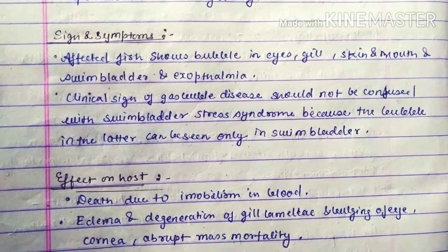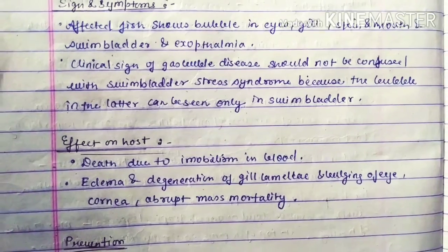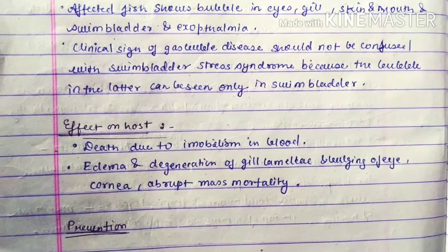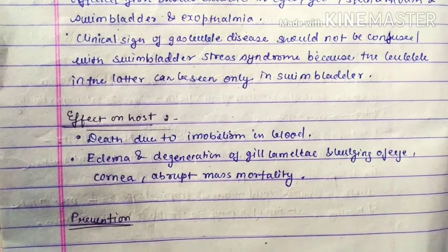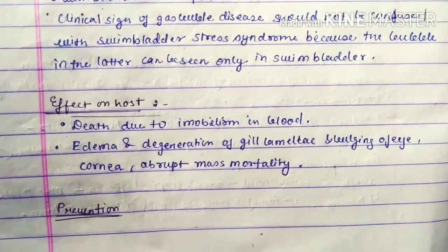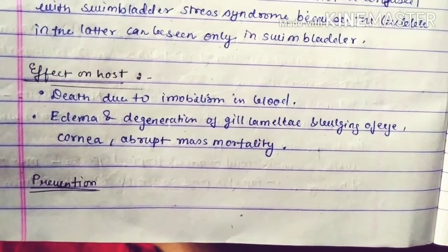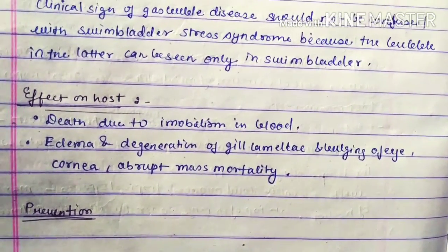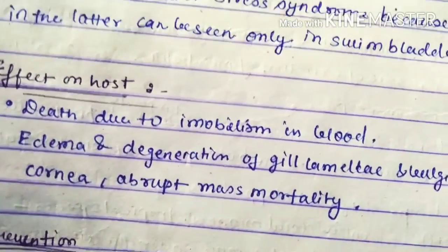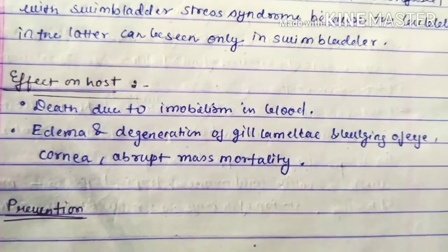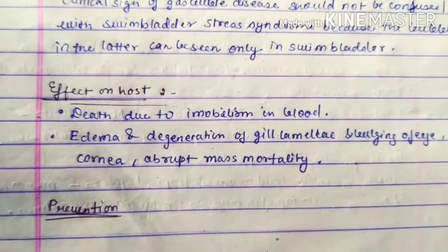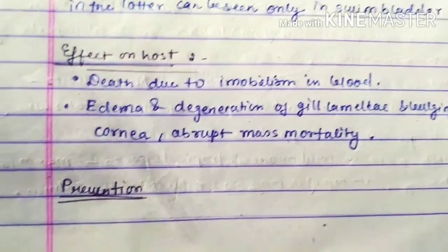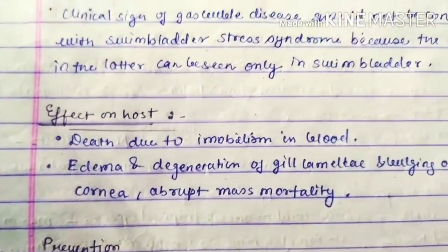Clinical signs of gas bubble disease should not be confused with swim bladder stress syndrome, because the bubble in the latter can be seen only in the swim bladder. Effects on the host include death due to immobilization, blood edema, degeneration of gill lamella, bulging of the eye and cornea, and abrupt mass mortality.